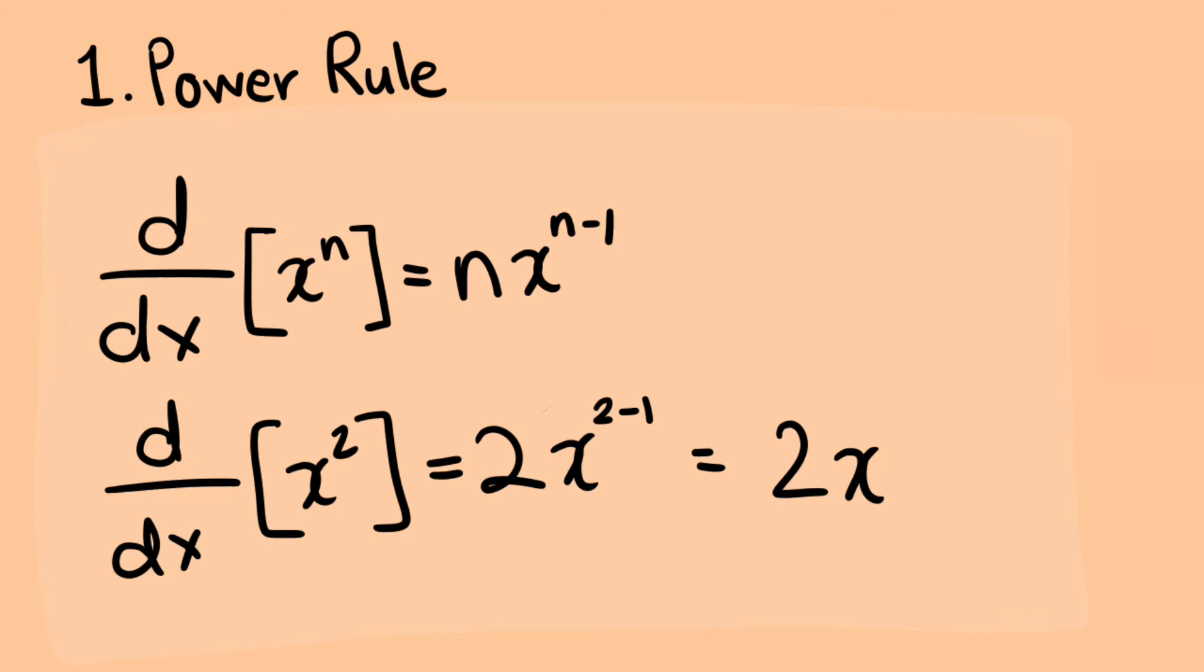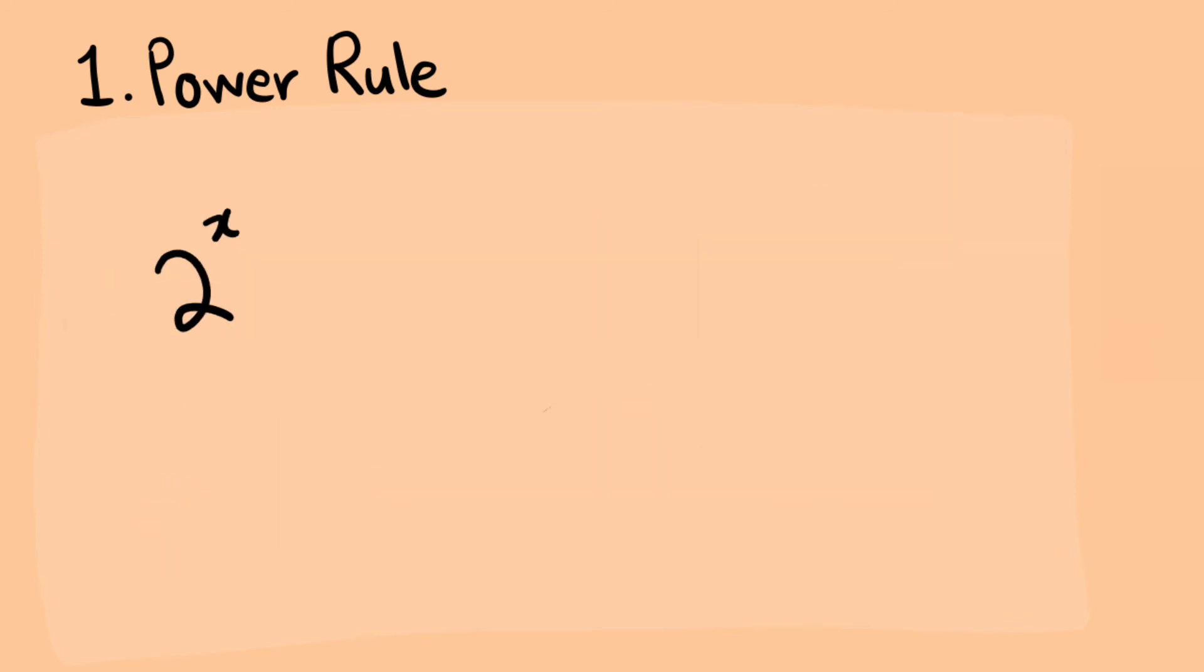So for x to the power of 2, the derivative will be 2x. You need to keep in mind that every rule in derivatives has its restrictions. For example, the power rule applies to functions of which their base is a variable. If the exponent was a variable, the power rule would not be applicable because the power rule only applies to functions where the variable is the base.